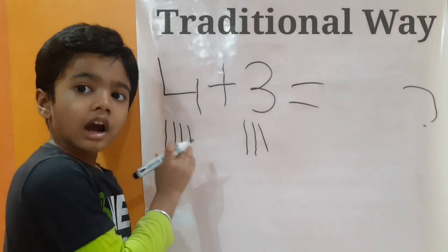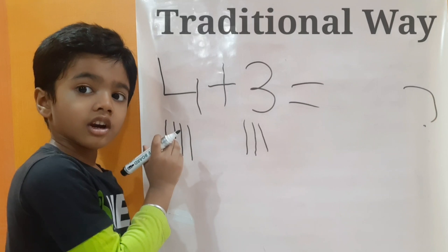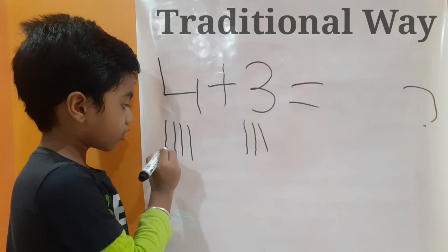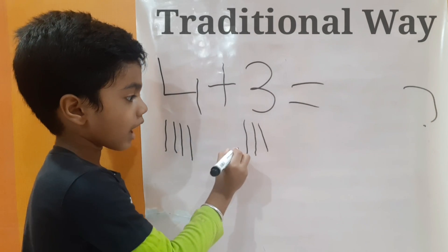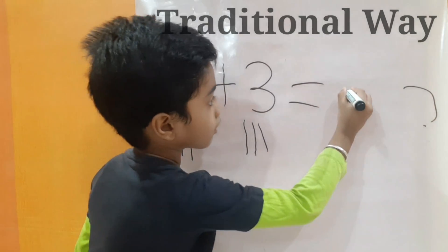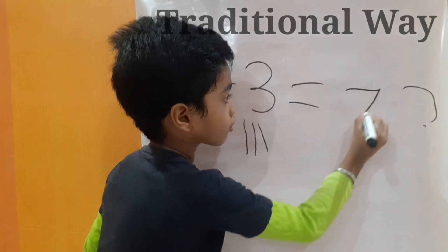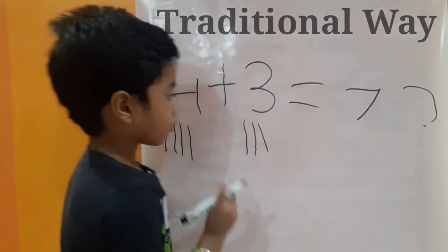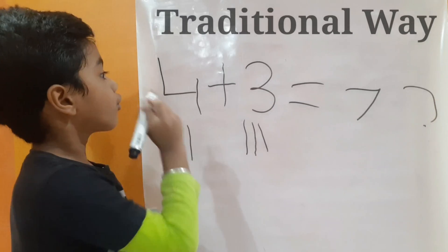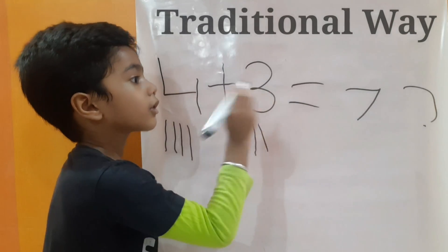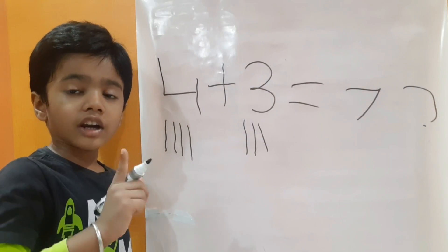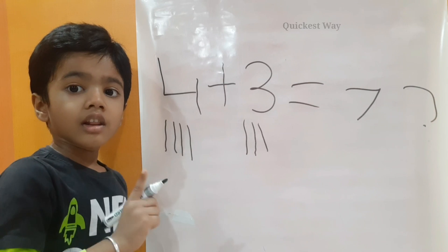Let's count from the start: 1, 2, 3, 4, 5, 6, 7. So the answer is 7. 4 plus 3 equals to 7. This is the traditional way.